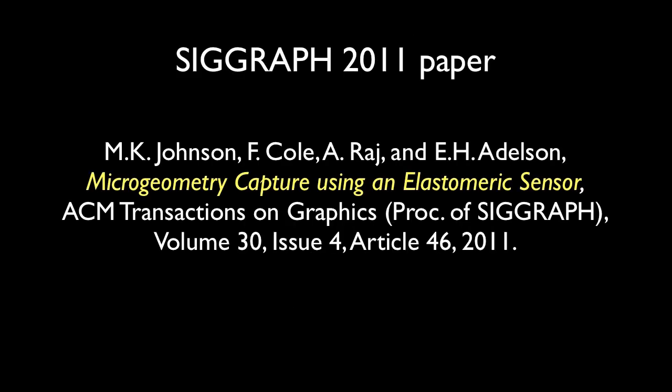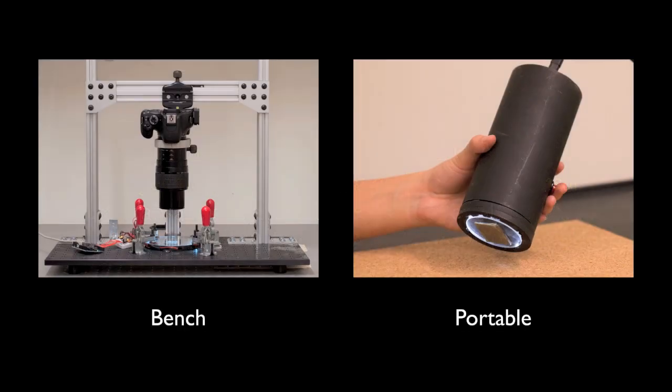These improvements are published in our SIGGRAPH 2011 paper, Microgeometry Capture Using an Elastomeric Sensor. We built two versions of this new design, a bench configuration with an 18-megapixel camera and a portable handheld device.